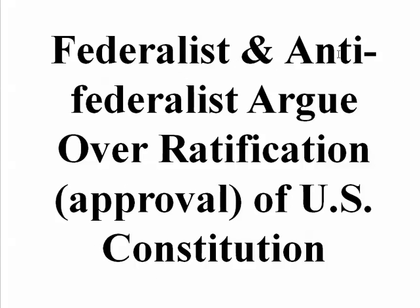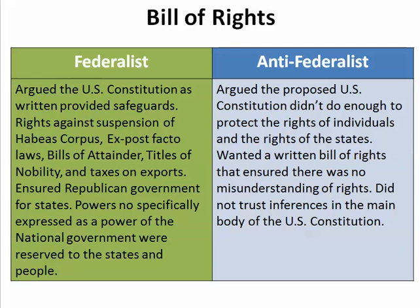Let's look at some of the background here. The Federalist and Anti-Federalist arguments — we've gone over already when they argued over ratifying or approving the U.S. Constitution. One of the biggest arguments we did not discuss had to do with the Bill of Rights. The Anti-Federalists argued that the proposed U.S. Constitution didn't do enough to extend protections to individuals or to protect the rights of individuals and the rights of the states. They wanted a written Bill of Rights to ensure there would be no misunderstanding, and they didn't trust the necessary and proper clause — the elastic clause — that gave power to the national government. They did not trust inferences in the main body of the Constitution.